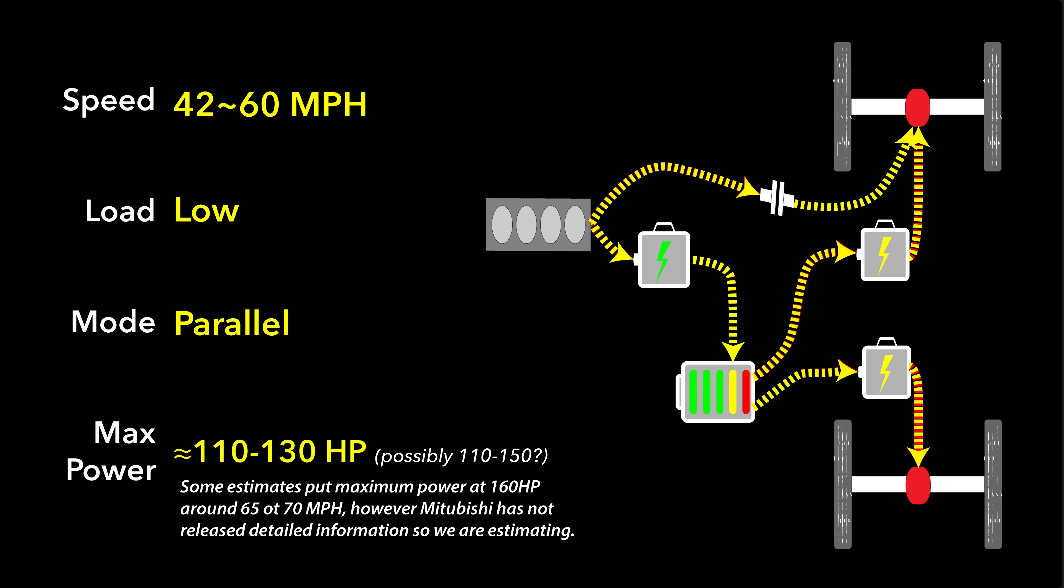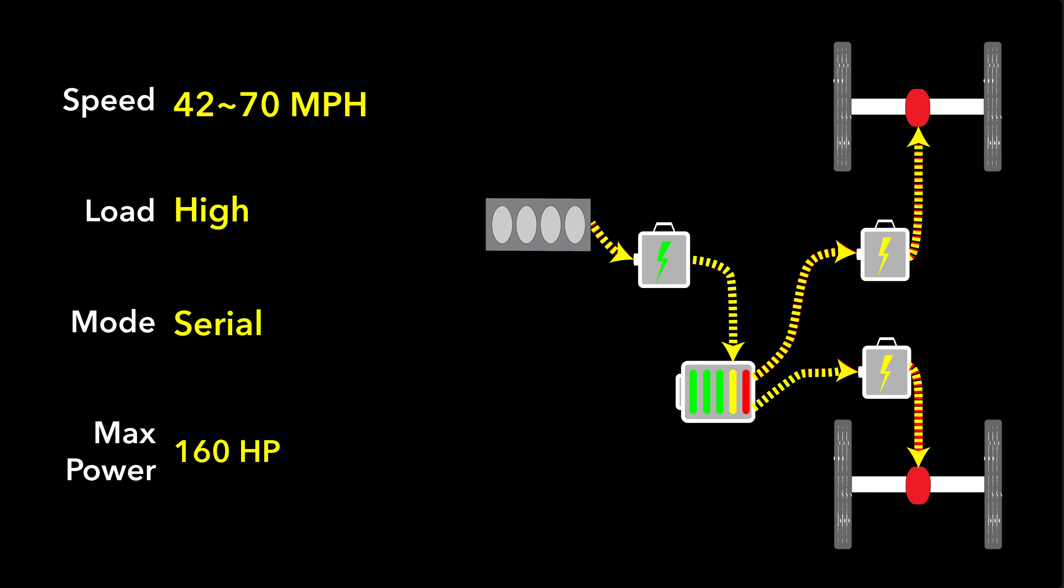At highway speeds, if you need more power or more torque, the system will move back to a serial hybrid mode. This gives you that 160 horsepower total, again drawing from the battery and drawing from that generator, and this mode will take you up to right around 70 miles an hour or so.